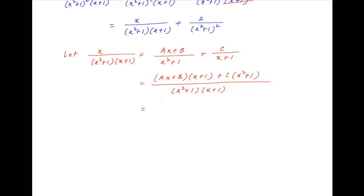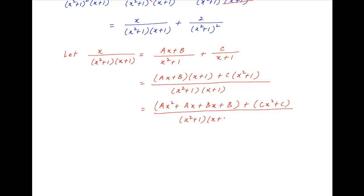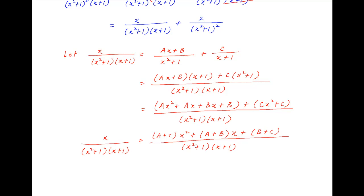This equals ax squared plus ax plus bx plus b plus cx squared plus c in the numerator, with the same denominator (x squared plus 1)(x plus 1). Collecting terms with like powers of x, we get (a plus c)x squared plus (a plus b)x plus (b plus c), all divided by (x squared plus 1)(x plus 1), which equals the left-hand side x over [(x squared plus 1)(x plus 1)].